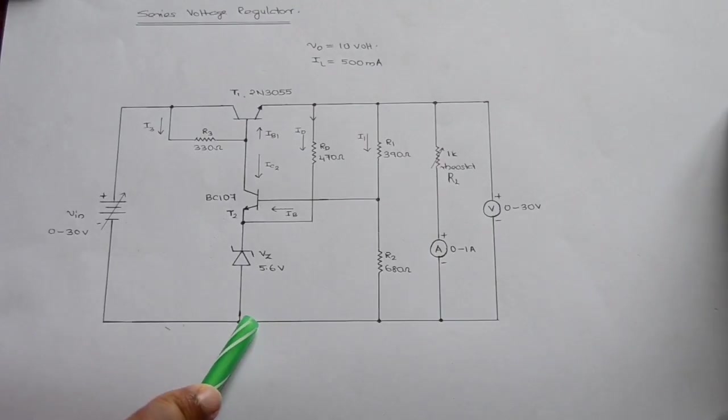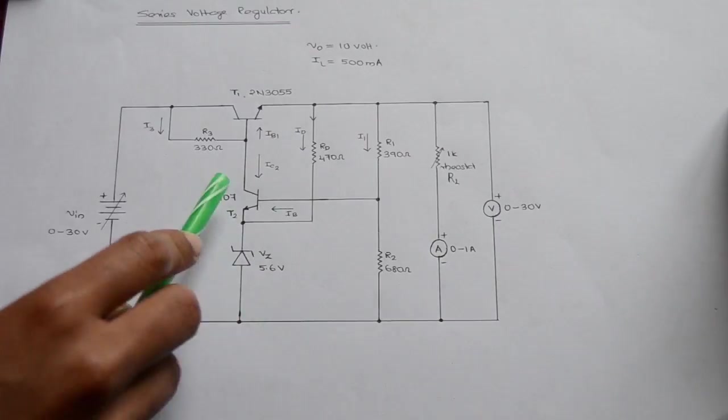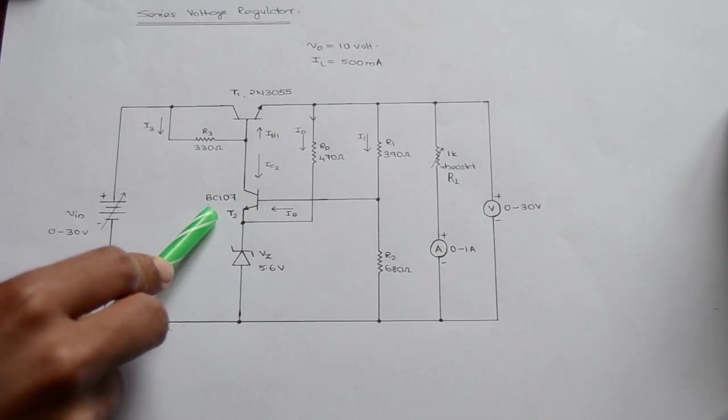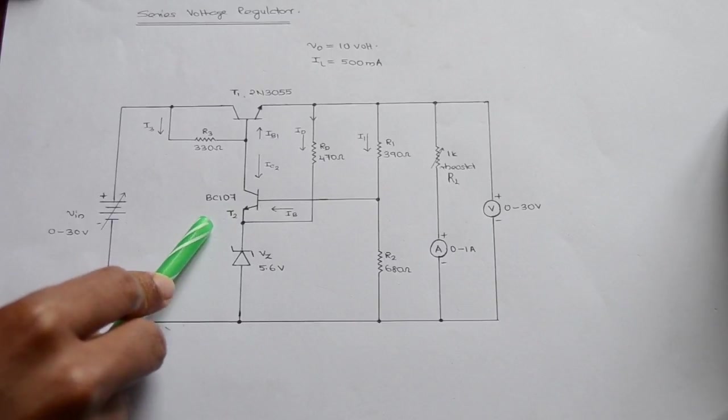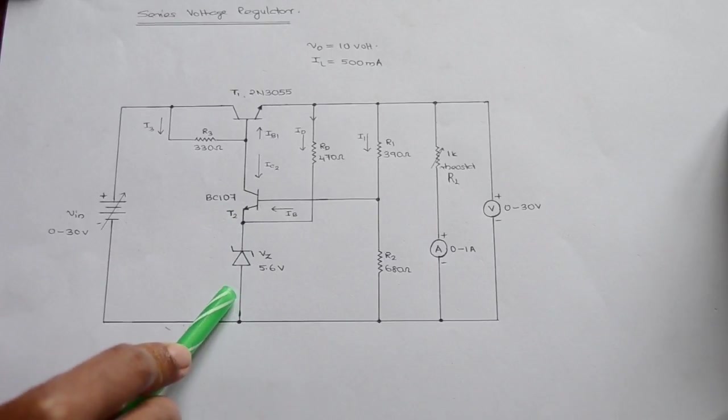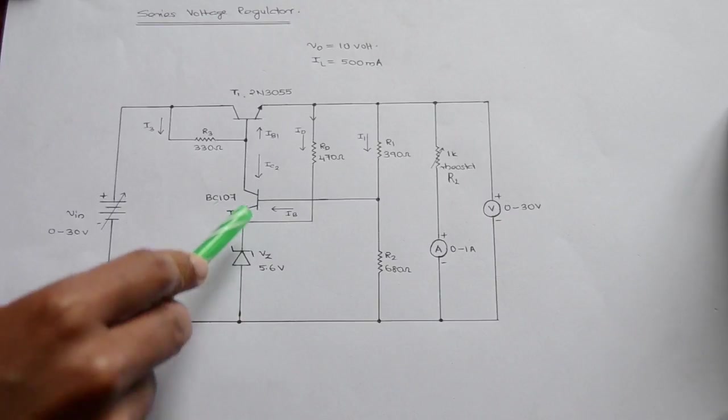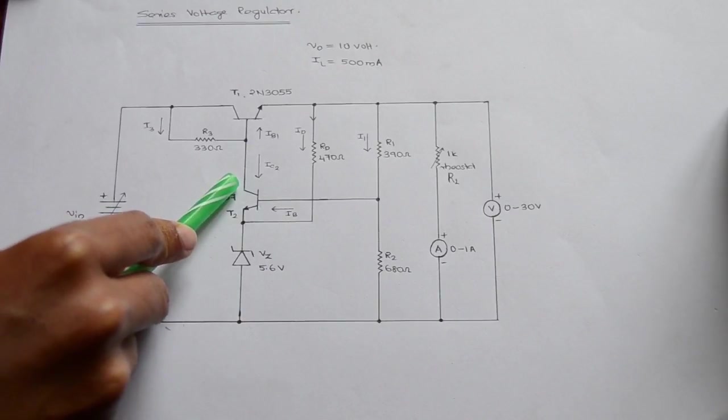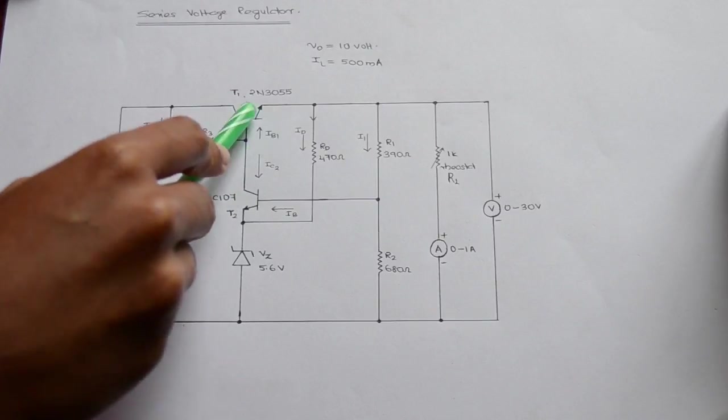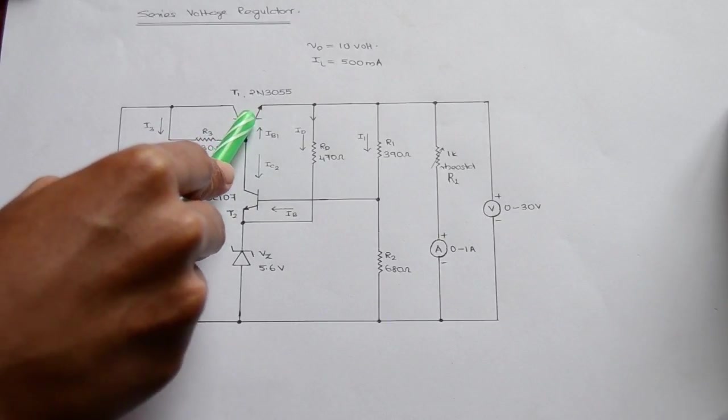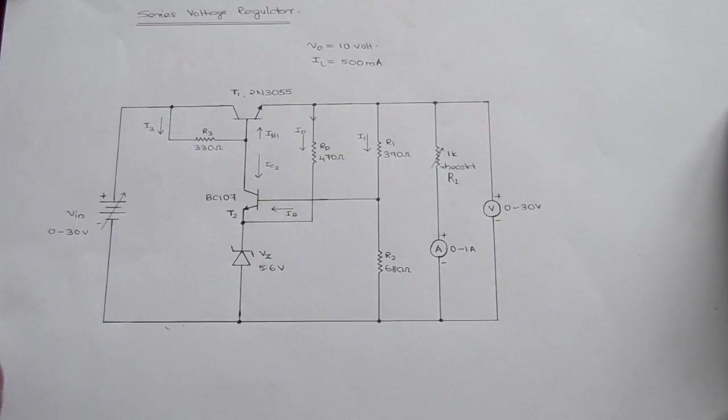Suppose there is an increase in the output voltage. This will cause an increase in the base emitter potential of T2. The emitter potential of T2 will remain constant because of the Zener diode connected at the emitter. There is a corresponding increase in the collector current which will decrease the collector potential. This will result in a decrease in the emitter potential of T1, thus nullifying any change in the output.